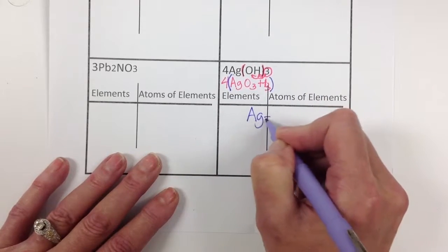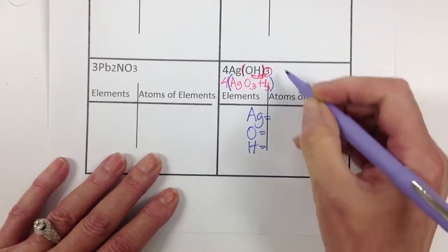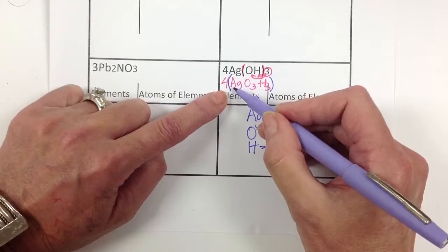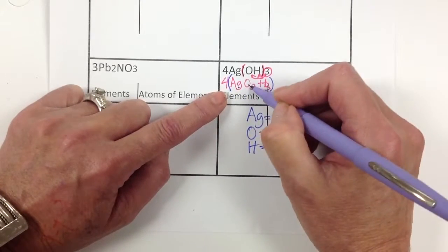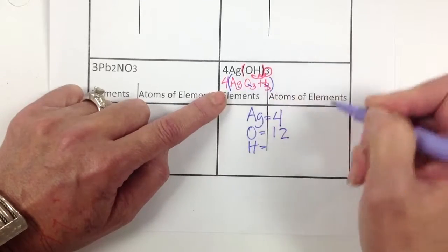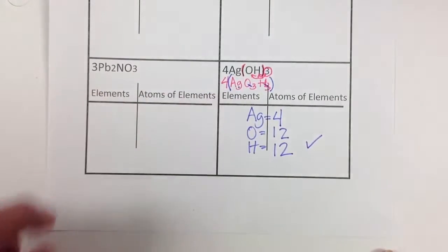So we're going to list our elements. And then we are going to count the atoms of each element. So silver, Ag, four times the one gives us four. Oxygen, we have three. Four times that three gives us twelve. And hydrogen, we have three. Four times that three gives us twelve. So that should be what this looks like.